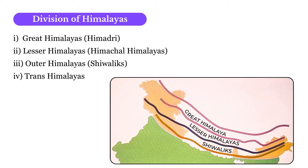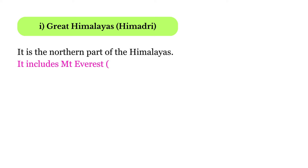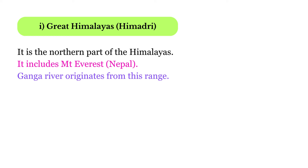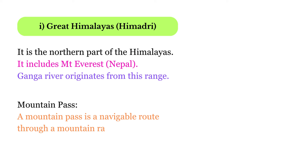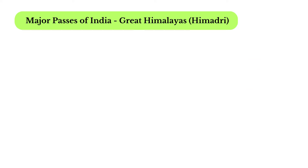The Great Himalayas, also called Himadri, is the northern part of the Himalayas. It includes Mount Everest — which is in Nepal, not India — and the Ganga River also originates from this range. A mountain pass is a navigable route through a mountain range or ridge; when two mountains are there, a route is formed in between, and that route is known as a mountain pass. There are many major passes formed in the Great Himalayas.